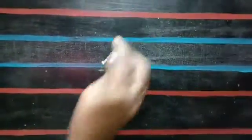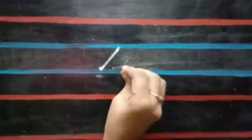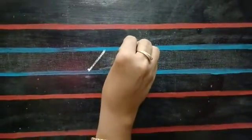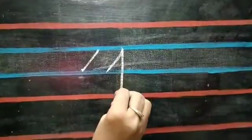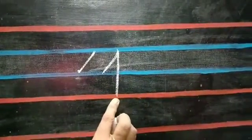For writing J, we should draw one small slanting line first. Then don't take your hand, draw one standing line, touch the last red line.